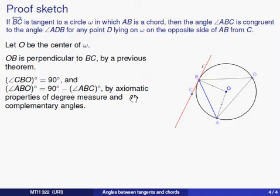We'll know that angle ABO, this angle right there, is complementary to the angle ABC, so its degree measure, ABO's degree measure, will be 90 degrees minus the degree measure of angle ABC, whatever it is.